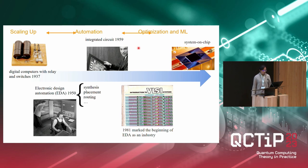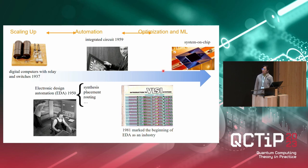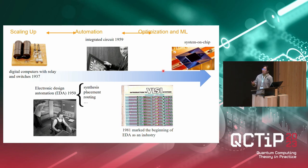A similar thing has already happened in classical computing when we scaled from one or two transistors up to billions of transistors and system-on-chip microprocessors. What really propelled this revolution is so-called electronic design automation, where things are automated. And once automation happens, advanced optimization and machine learning are required to really squeeze out as much as we can as we scale the system up.